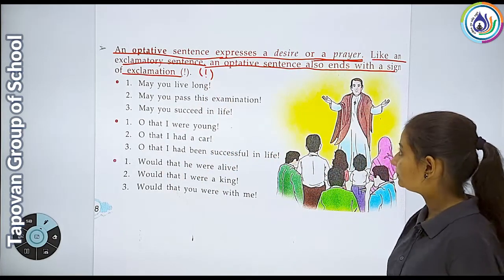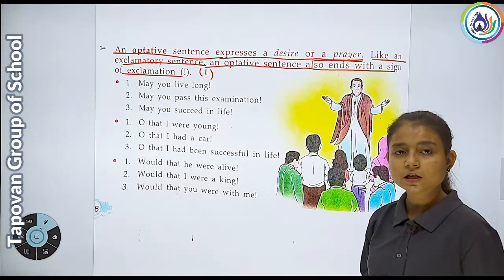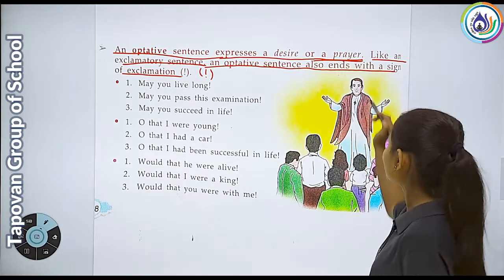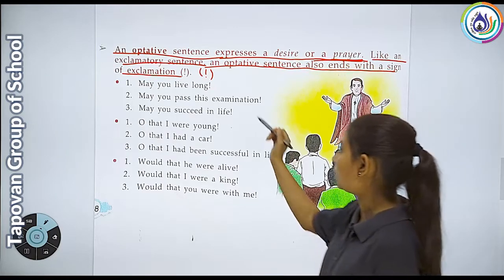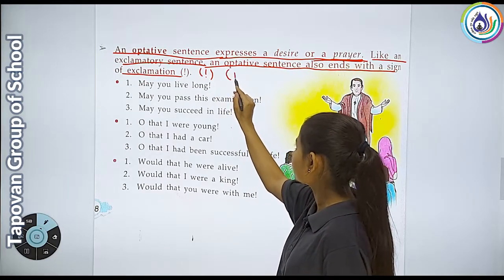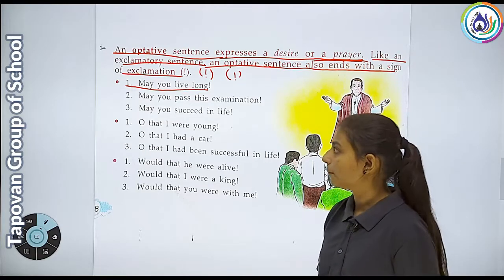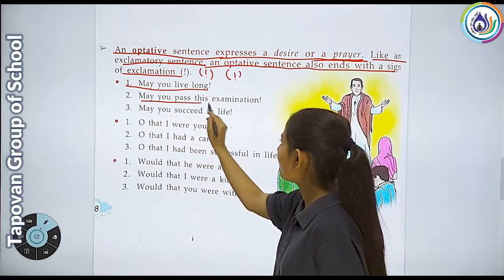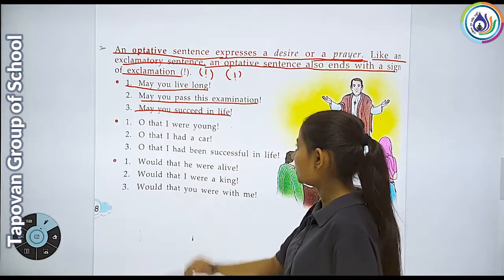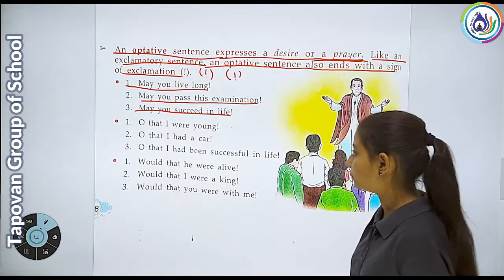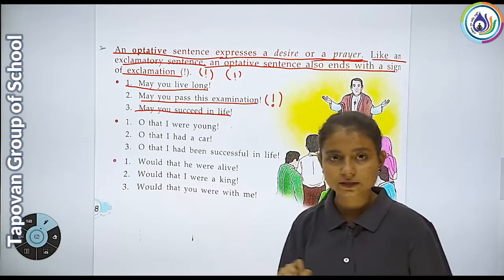Jab bhi optative sentence mein hum express karte hain hamari icha aur hamari prarthana - jaise ki 'Bhagwan ise lambi umra de' - ye hamari prayer hai. Aur optative sentence ki end mein exclamation sign lagega. Jaise ki: 'May you live long!' - tum lamba jiyo; 'May you pass this examination!' - tum is examination mein paas ho jao; 'May you succeed in life!' - tum life mein successful ho jao. Sentence ke peechhe exclamation mark lagayenge.